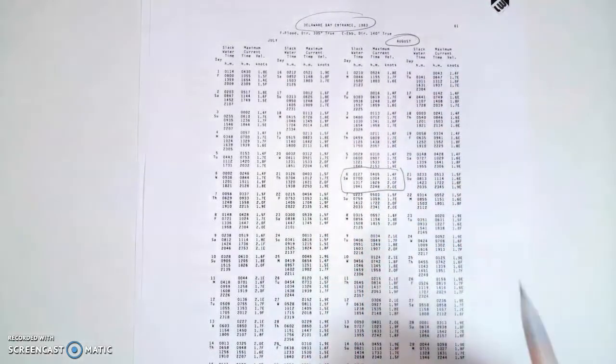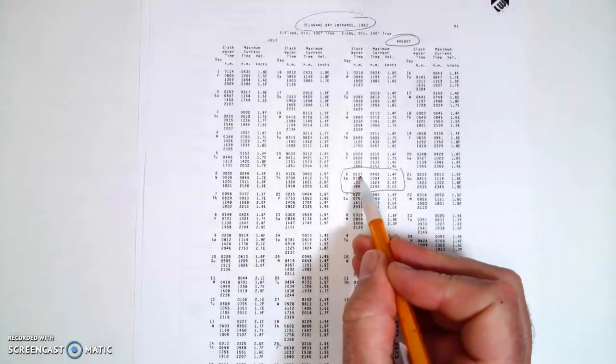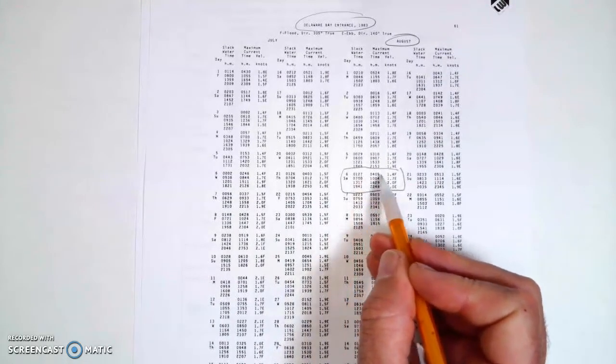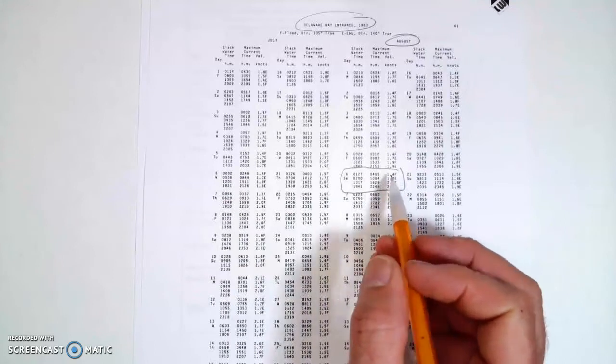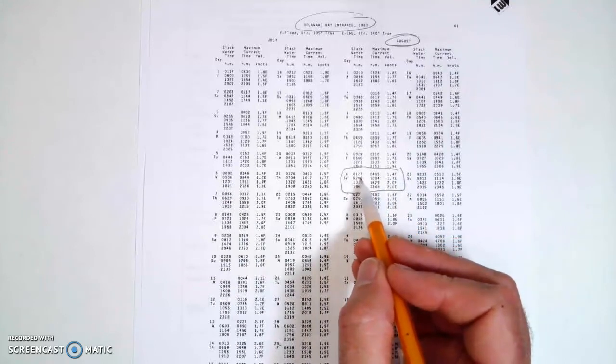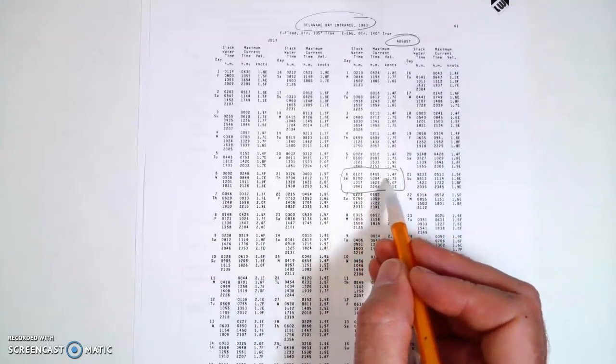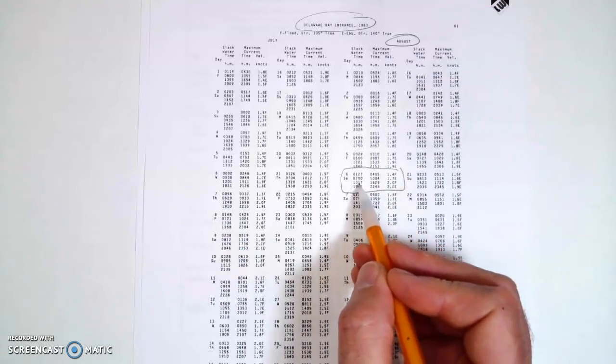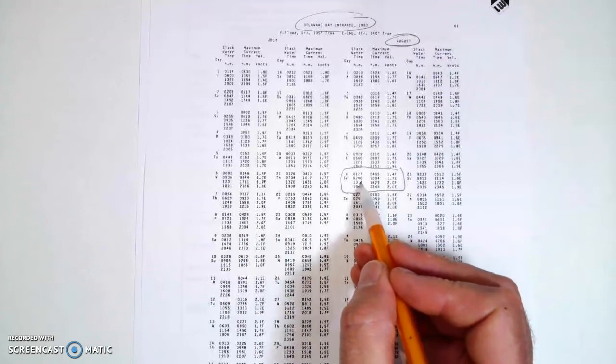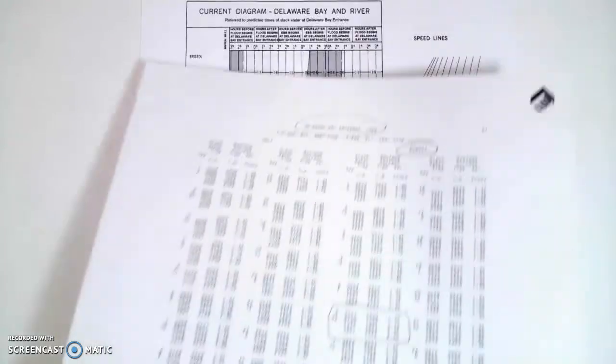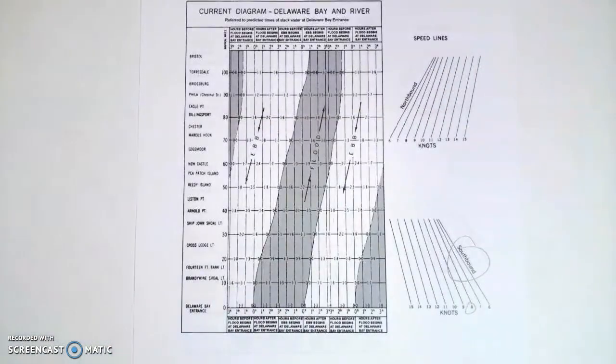It's a little bit small to see, but there is an 0127 slack before a flood, and there is a 0700 slack before an ebb. There's a 1317 slack before a flood. So 1317 is going to be my close time.